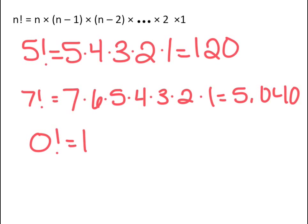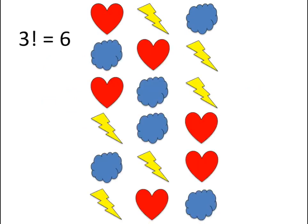In case you are wondering what factorials are used for, they tell you how many different ways you can arrange n different objects. For example, for 3 objects, there are 3 factorial or 6 different arrangements.